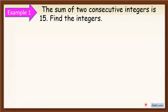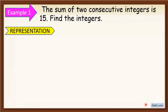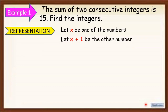We are going to make a representation. After natin maintindihan kung ano yung hinahanap natin sa problem, gagawa na tayo ng representation. Let x be the first number. Let x plus 1 be the other number. Bakit x plus 1? Kasi magkasunod lang naman sila. Since they are consecutive integers, mag-plus 1 ka lang para makuha mo yung second number.